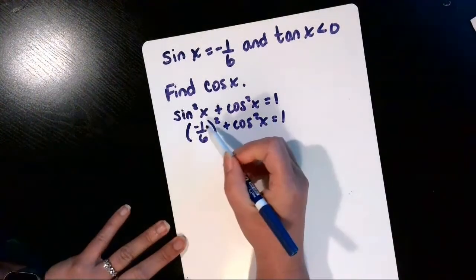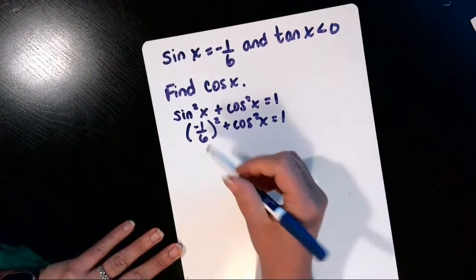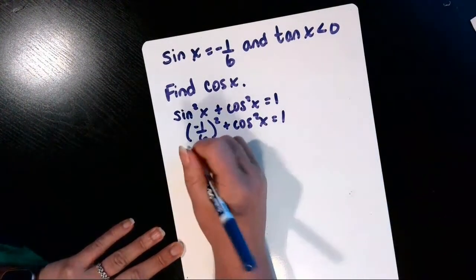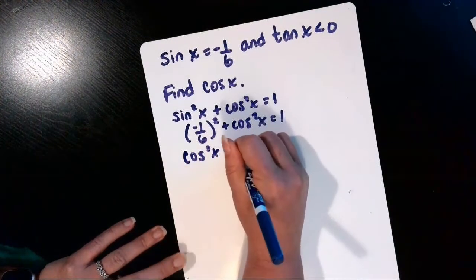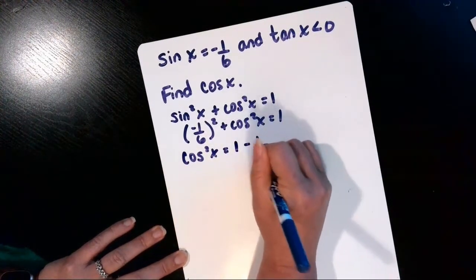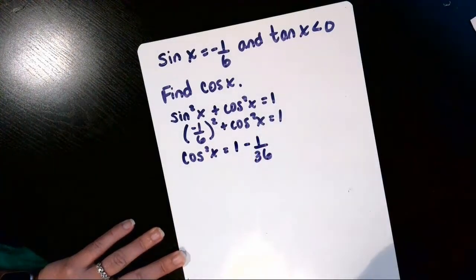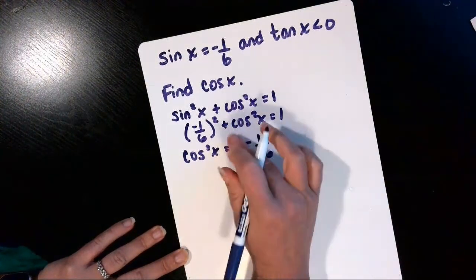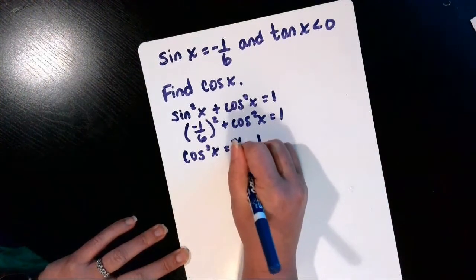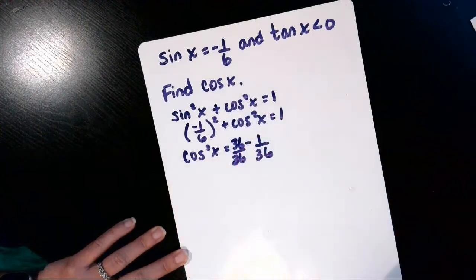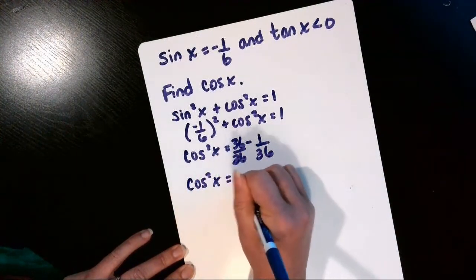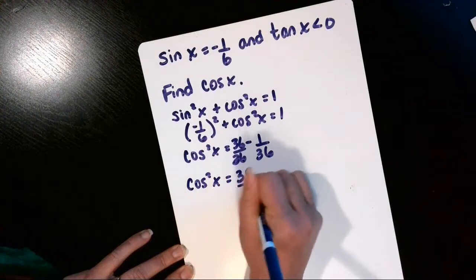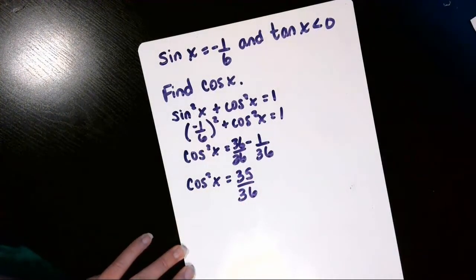So we're going to square this negative one-sixth and then subtract that over to the other side. So cosine squared x is equal to 1 minus 1 over 36. And we need a common denominator, so we'll change that one into 36 over 36. And then cosine squared x is equal to 35 divided by 36.